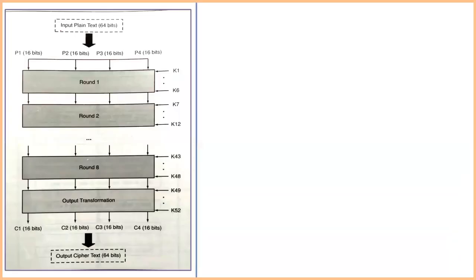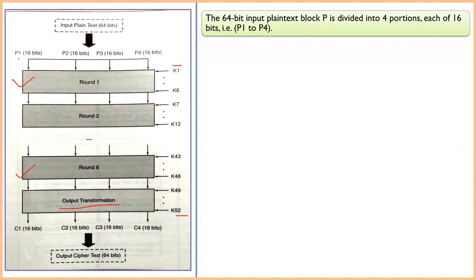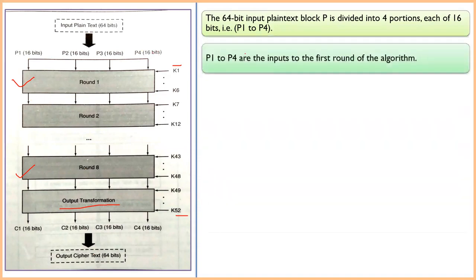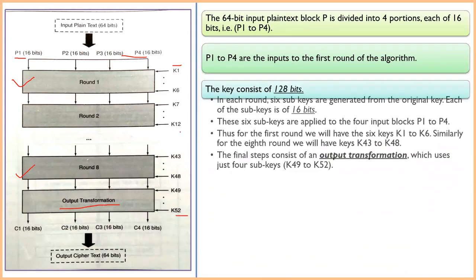The process takes a 64-bit plaintext input, passes it through eight rounds, and produces a 64-bit ciphertext output via a final output transformation step. The 64-bit plaintext is divided into four 16-bit blocks — P1 through P4 — which serve as inputs to the first round. The 128-bit key is divided into 52 subkeys.